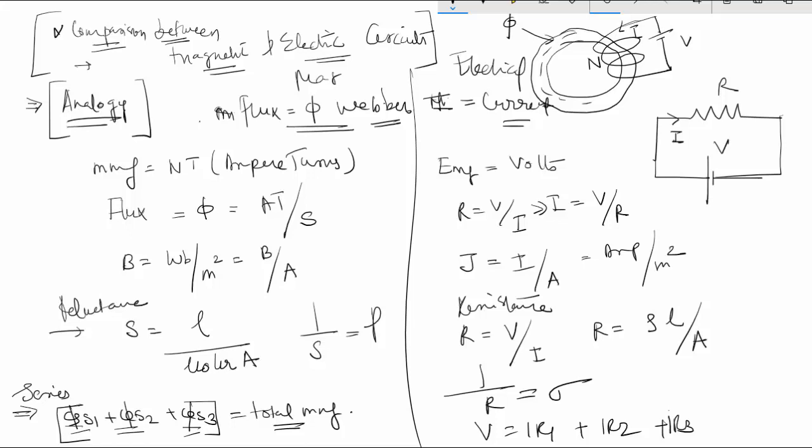So this is how it is possible to compare the magnetic and the electrical circuits in a very simple way. This is not a comparison but it is more of an analogy which can say that how some of the components in the magnetic circuits are very much similar to some of the components in the electrical circuits.